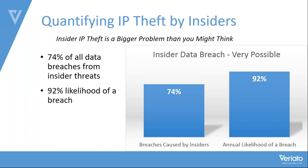Based on company surveys and self-reporting, the average company has a 92% likelihood of experiencing a breach in the next 12 months. It's not if it's going to happen — it's when. This tells you that maybe we should be focusing most of our cybersecurity efforts, resources, time, and money on looking at the insider threat rather than just deploying firewalls, IDS, and IPS to stop outside traffic.